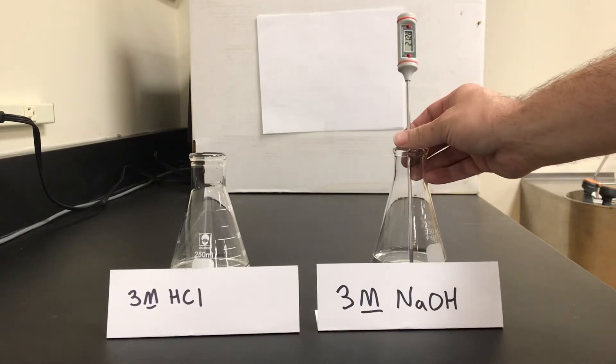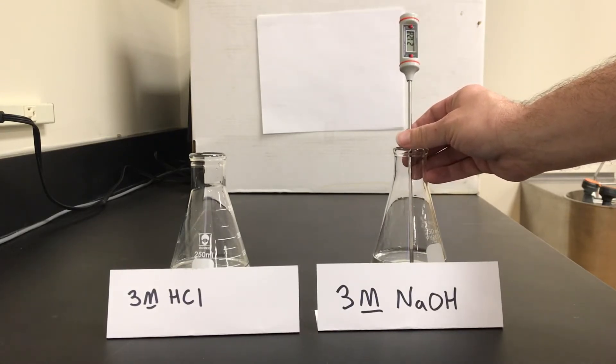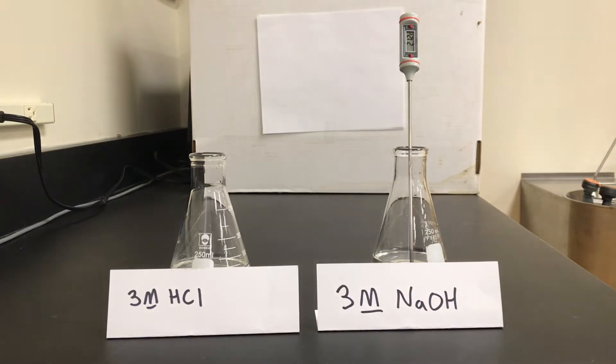As you can see, if I turn the thermometer a bit, the initial temperature of my sodium hydroxide solution is room temperature, which here in the lab today is 21.2 degrees C. What I'm going to do is pour the hydrochloric acid into the sodium hydroxide and initiate a chemical reaction.